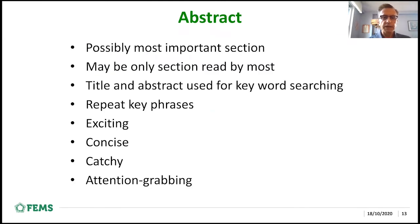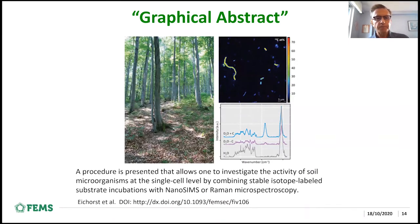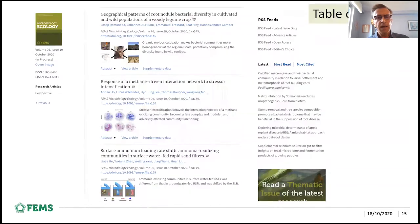The title should draw readers to also read the abstract, which is possibly the most important section of your paper — and it may be the only section read by most. Make it exciting, concise, catchy, and attention grabbing. Use the words for keyword searching and repeat key phrases as important. Many journals such as FEMS Microbiology Ecology also have a graphical abstract — basically a figure to catch the reader's attention — used in the table of contents combined with a short one-sentence summary, hopefully drawing readers to look in and read more.